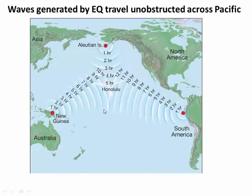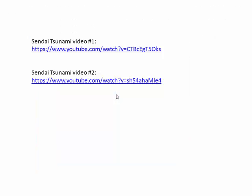This figure shows the travel time of tsunami waves from important subduction zones around the world. From South America it would take about 12 hours for that tsunami wave to hit Hawaii. From the Aleutians it would take about 5 hours. Long story short, Hawaii is probably going to get hit by a tsunami sometime soon.